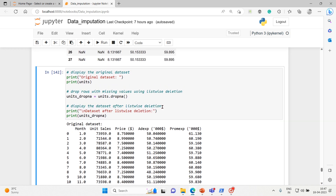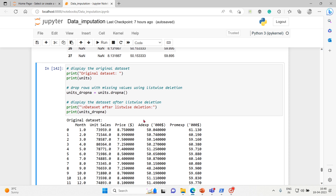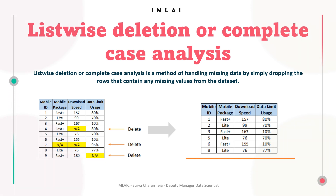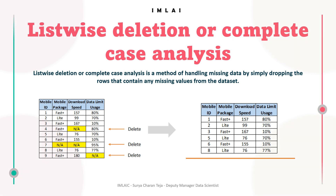In this example, we used the dropna function from pandas to drop rows with missing values, resulting in a new dataset — units_dropna — without any rows containing missing values. It's important to know that list-wise deletion can result in loss of data, as entire rows with any missing values are removed. This method may not always be suitable, especially if the dataset has a large number of missing values or if the missing values are not randomly distributed. So carefully consider the implications of list-wise deletion before using it.